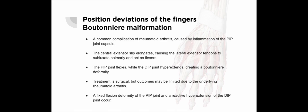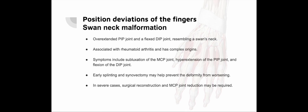Boutonnière deformity: Boutonnière deformity, a common complication of rheumatoid arthritis, stems from inflammation of the PIP joint capsule, causing elongation and subluxation of the extensor tendon. This results in a fixed flexion deformity of the PIP joint and a reactive hyperextension of the DIP joint, resembling a boutonnière. Treatment is primarily surgical, but achieving satisfactory outcomes can be challenging due to the underlying rheumatoid arthritis.